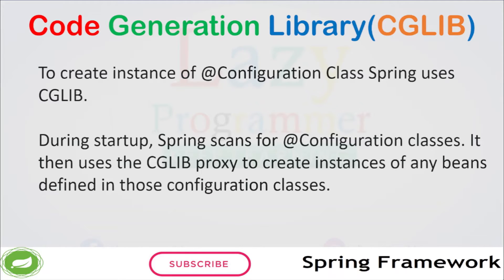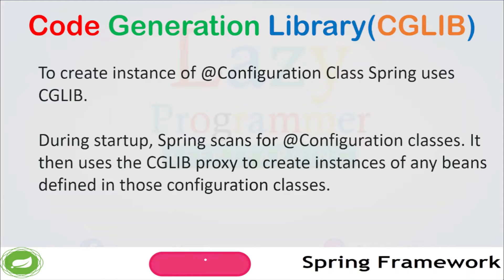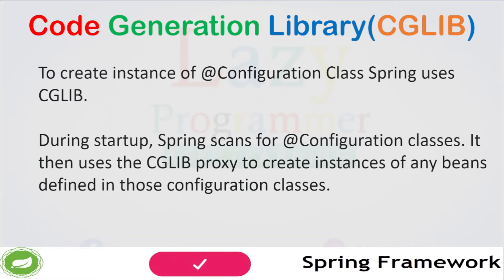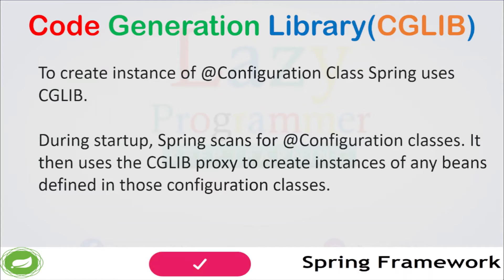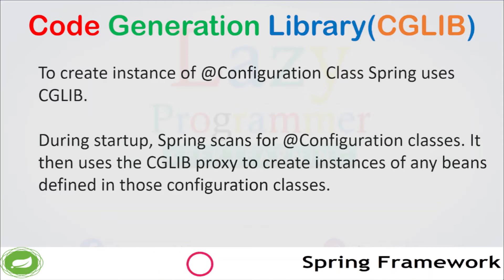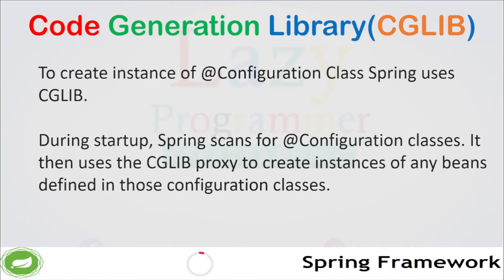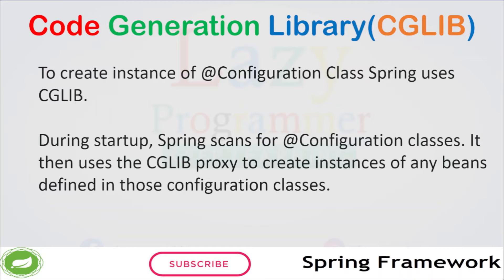This proxy is created by subclassing the configuration class and overriding any @Bean methods to return the actual bean instances. When Spring creates the application context, it scans all the @Configuration classes in the classpath and creates an instance of each one. It then uses the CGLib proxy to create instances of any beans defined in those configuration classes. For now, just understand that there is a proxy being created by Spring.